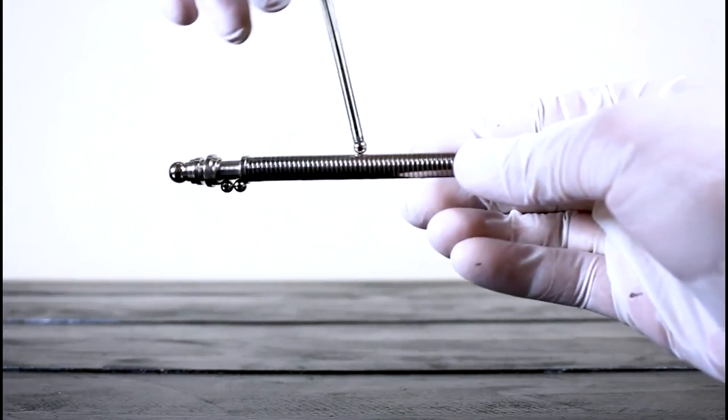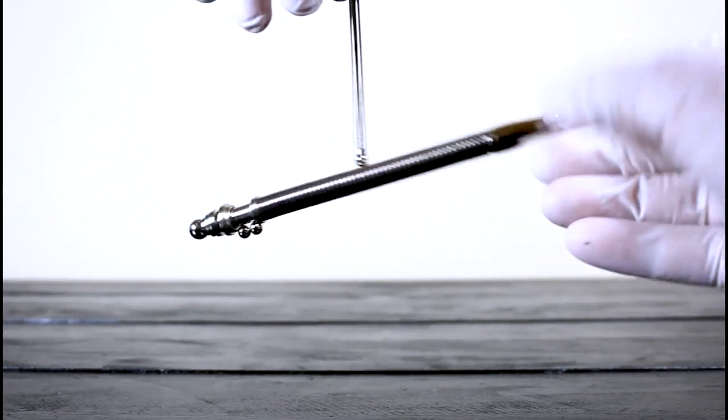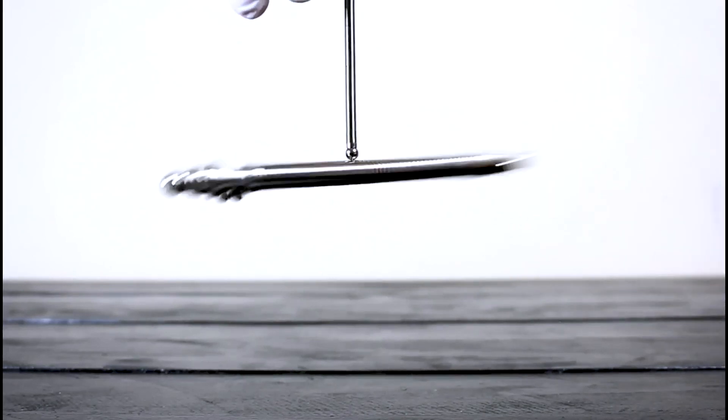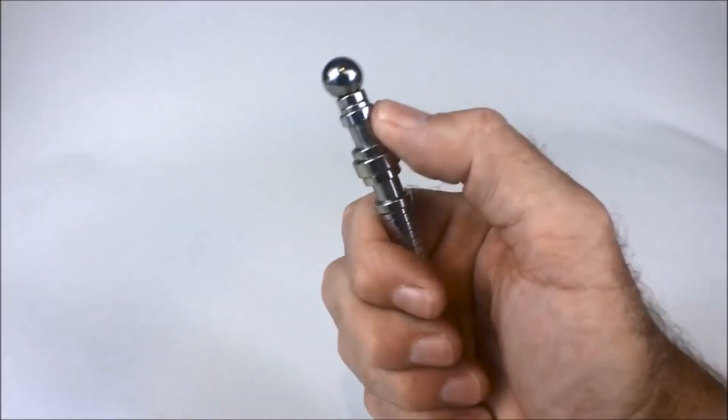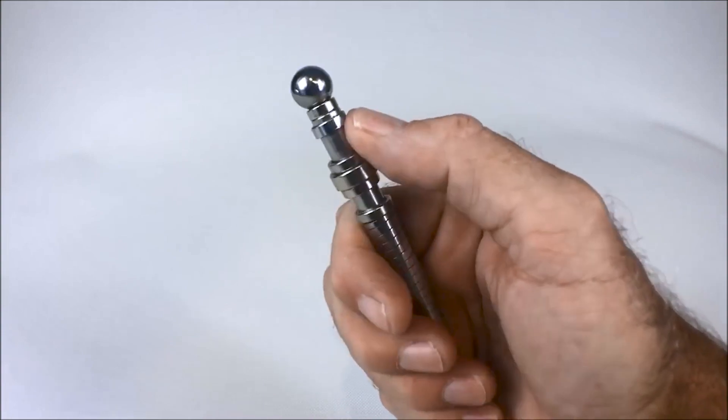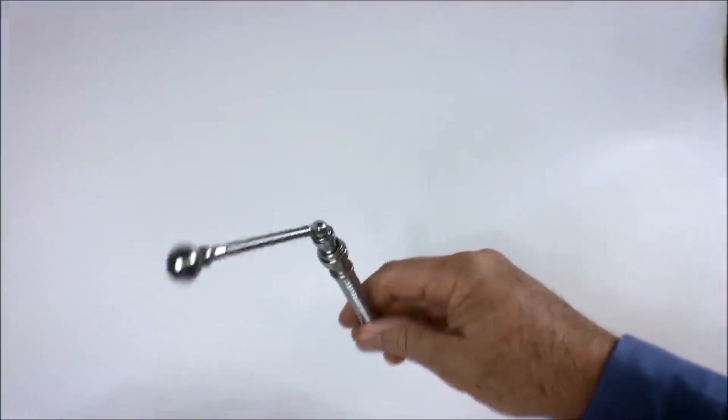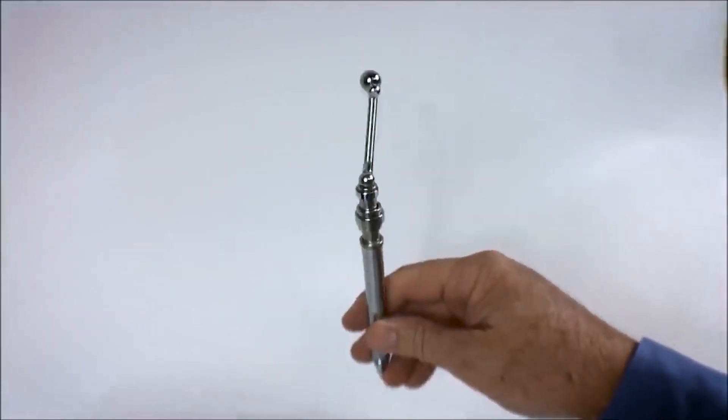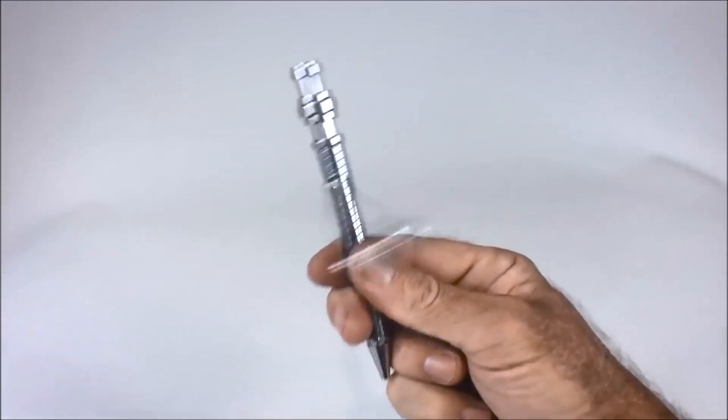What sets the Think Ink Pen apart is its unique built-in fidget mechanism. As you write with a pen, you'll notice its captivating movements. The pen barrel has a flexible spring that allows for endless fidgeting possibilities. You can twist, bend, and play with the pen, providing a satisfying tactile experience that helps relieve stress and restlessness.